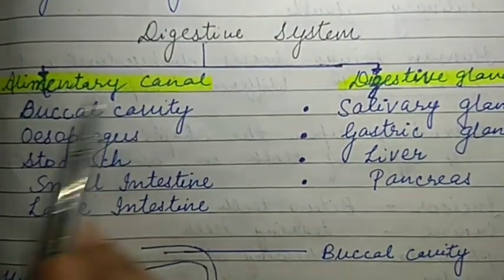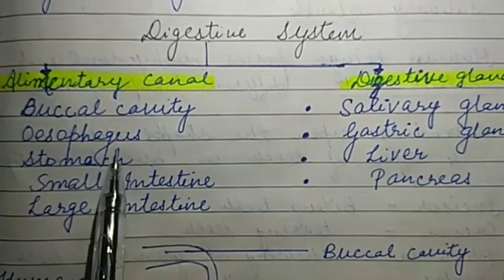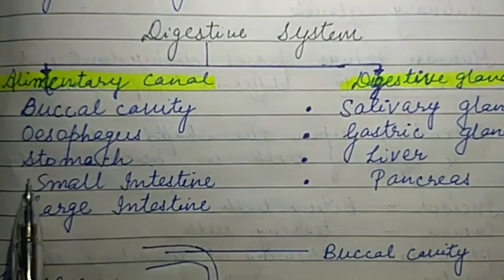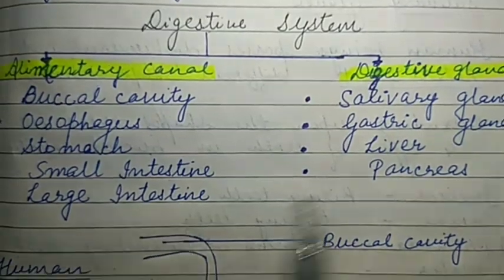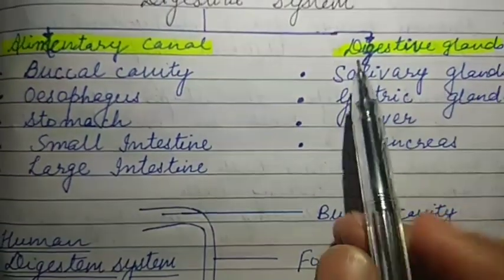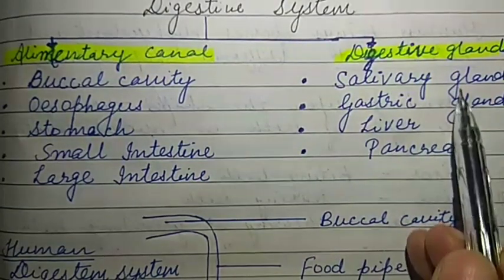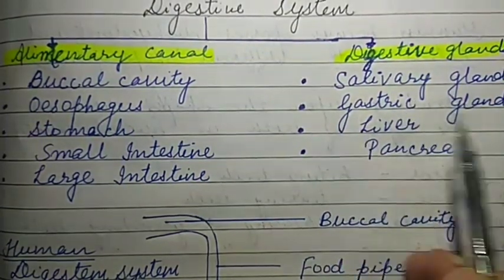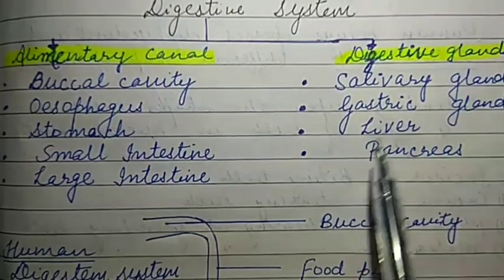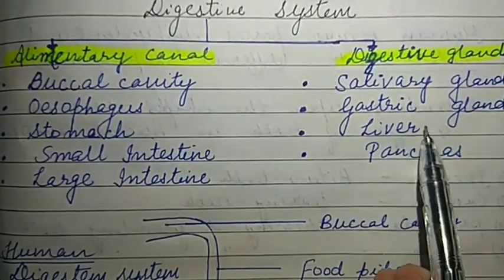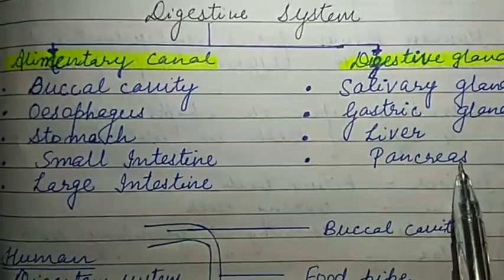In the alimentary canal, the parts are: mouth, buccal cavity, oesophagus, stomach, small intestine, and large intestine. In the digestive glands, the first gland is the salivary glands present in the buccal cavity; the second is the gastric glands present in the stomach; then the liver, which is the largest gland in our body; and lastly the pancreas.